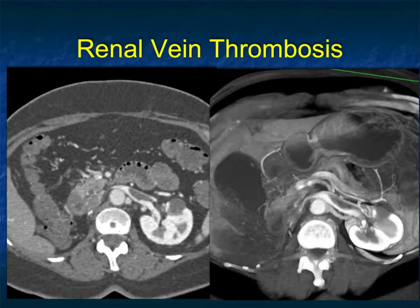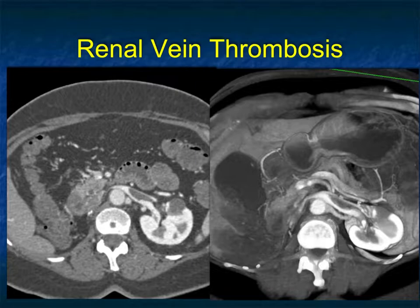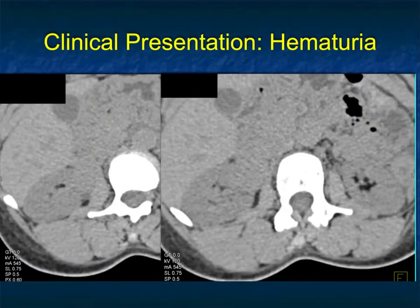Another case of non-occlusive renal vein thrombosis — this patient had a prior right nephrectomy. We tried to figure out why this patient had renal vein thrombosis; this was not tumor. The patient was treated with anticoagulant therapy and the renal vein thrombosis resolved. We think it was related to the patient's surgery and the right nephrectomy.